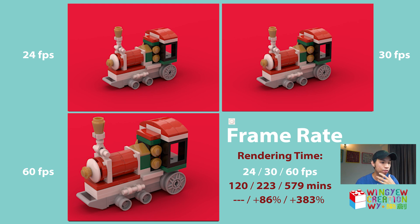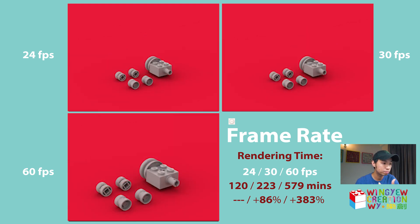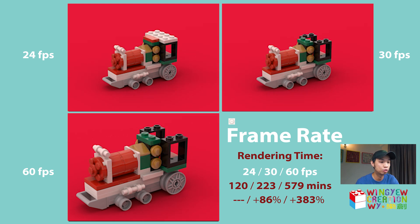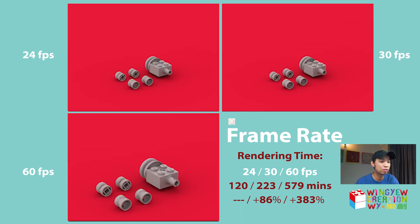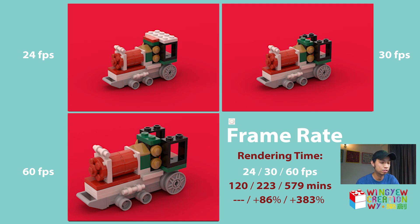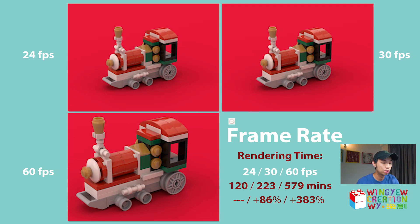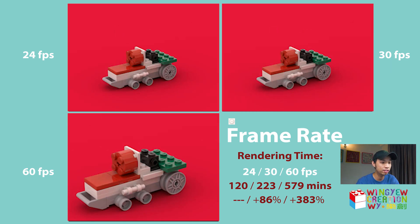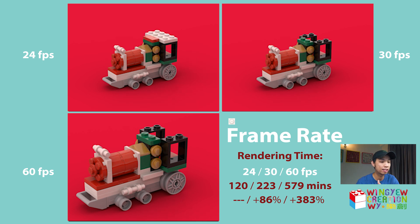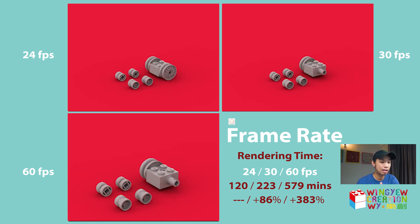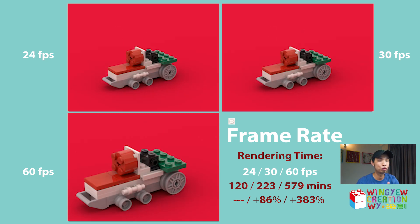For this example, at 24 frames per second it took my machine about 120 minutes to render, while 30 frames per second took about 223 minutes, and 60 frames per second took 579 minutes. So you can see that when changing to a higher frame rate, the time required is much higher. Going from 24 to 30 fps roughly doubles the render time.